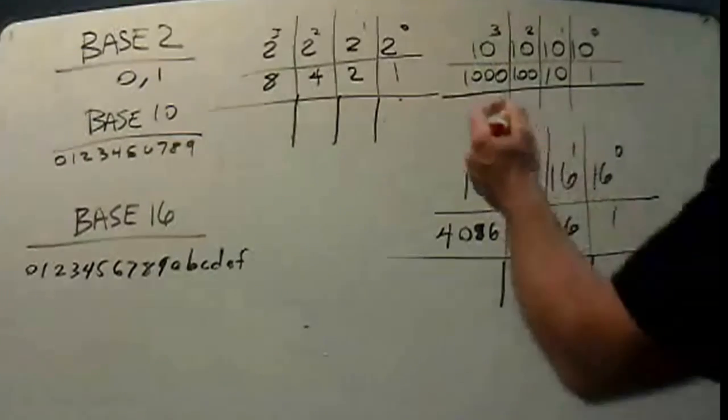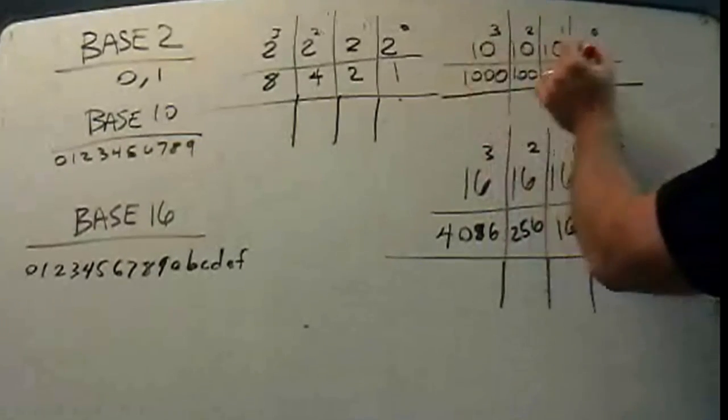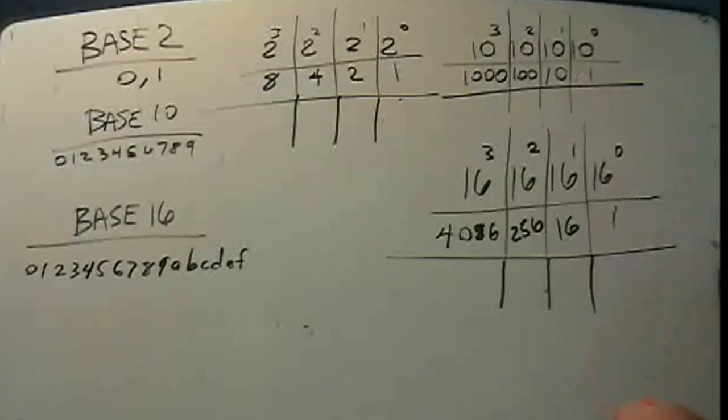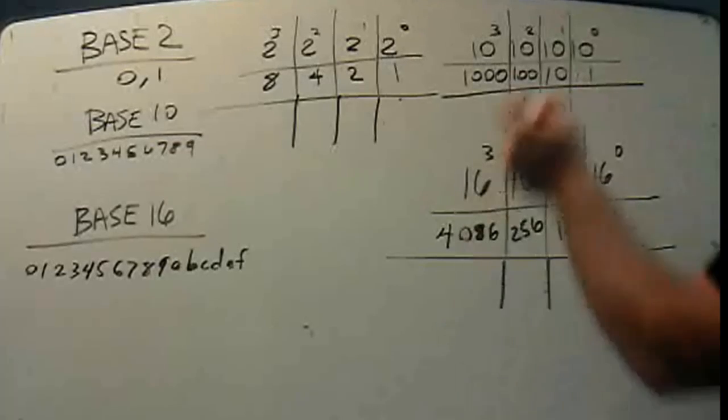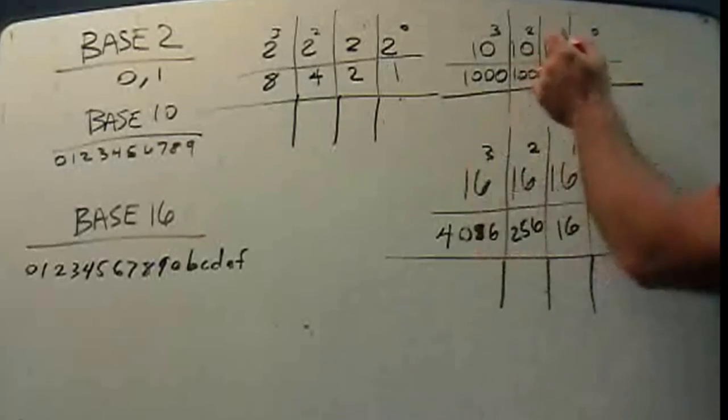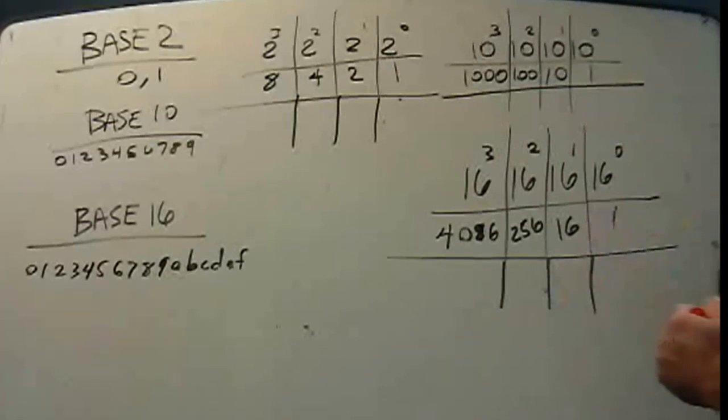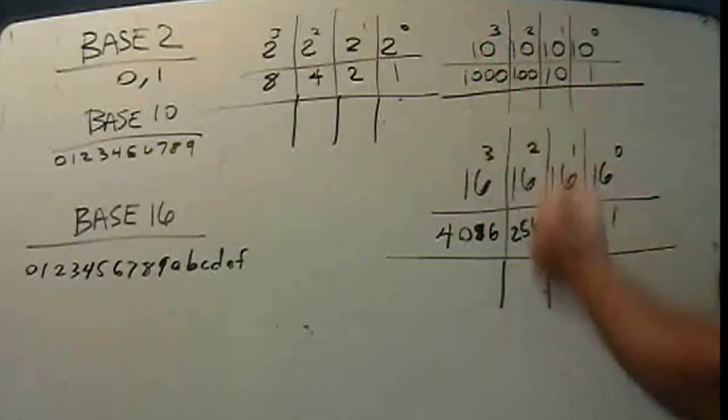So up here, I've got 10 to the 0, 10 to the 1, 10 to the 2, 10 to the 3, and these are the place values for base 10 decimal system. 10 to the 0 is the 1's place, 10 to the 1 is the 10's place, 10 to the 2 is the 100's place, and 10 to the 3rd power is the 1,000's place.